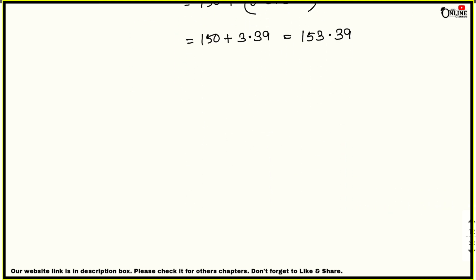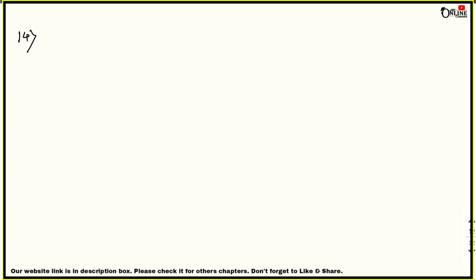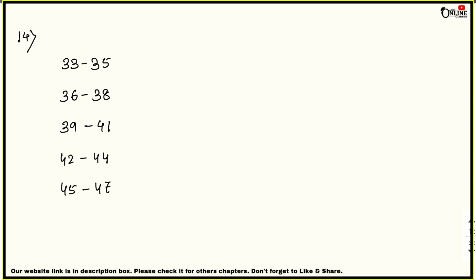Sum number 13 is similar to sum number 12, so I hope you can solve it yourself. Moving on to sum number 14. In sum numbers 12 and 13 the class intervals were continuous, but in sum number 14 the intervals are discontinuous — for example, 33–35, then 36–38, then 39–41, 42–44, and 45–47.